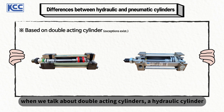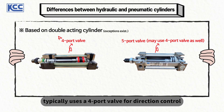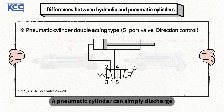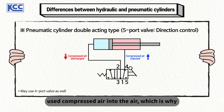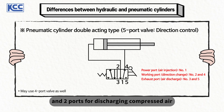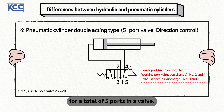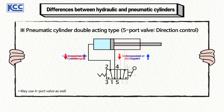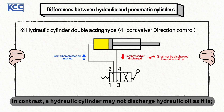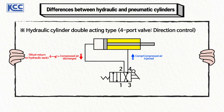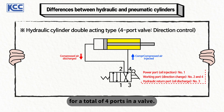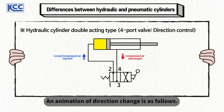Finally, when we talk about double-acting cylinders, a hydraulic cylinder typically uses a four-port valve for direction control, whereas a pneumatic cylinder uses a five-port valve. A pneumatic cylinder can simply discharge used compressed air into the air, which is why it consists of one entry port, two ports for direction change, and two ports for discharging compressed air, for a total of five ports in a valve. An animation of direction change is as shown on the screen. In contrast, a hydraulic cylinder may not discharge hydraulic oil as it is — instead, it must be returned to a hydraulic tank. Thus, it consists of one entry port, two ports for direction change, and one port for the return to a hydraulic tank, for a total of four ports in a valve. An animation of direction change is as follows.